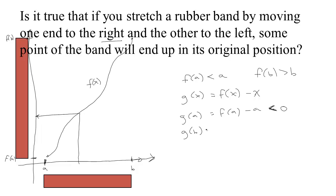I also know that G of B would be F of B minus B. And since I know that I moved the right endpoint of the rubber band to the right, I know that this has got to be higher. So, F of B is greater than B, so if I take a big number and subtract a number smaller, that's still got to be positive.